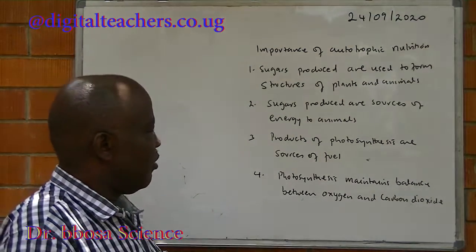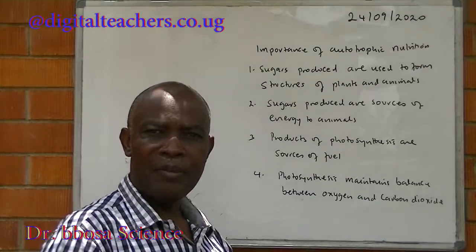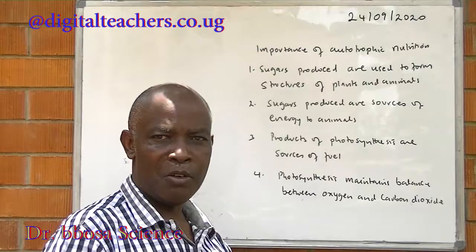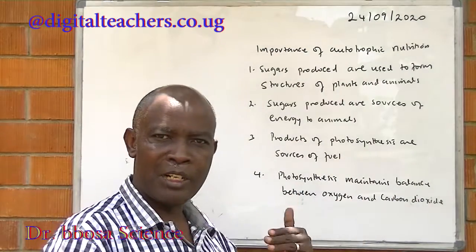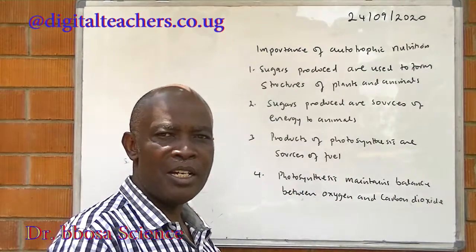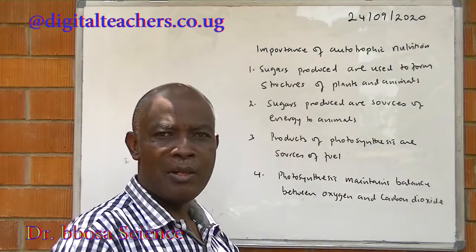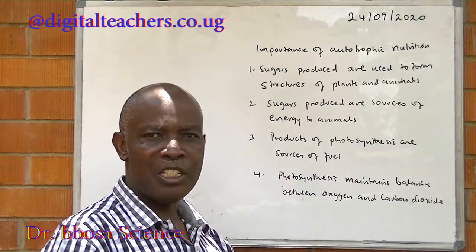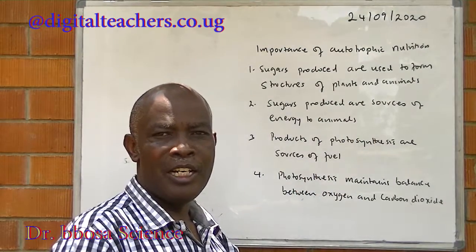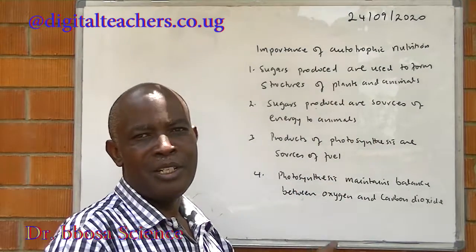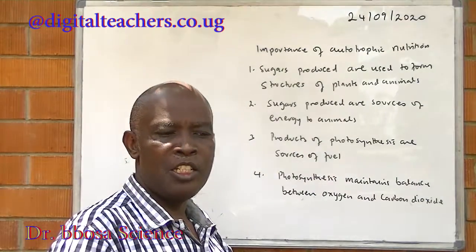Fourth, photosynthesis maintains the balance between carbon dioxide and oxygen. Photosynthesis consumes carbon dioxide from the atmosphere and produces oxygen into the atmosphere. At night, oxygen is used for respiration to produce carbon dioxide. During the day, oxygen is produced and carbon dioxide is used.